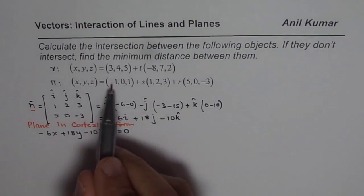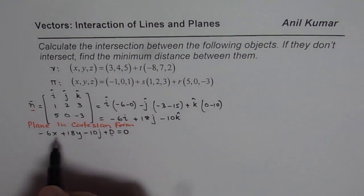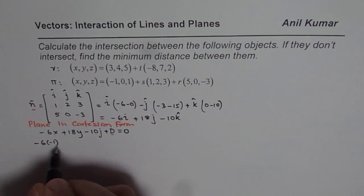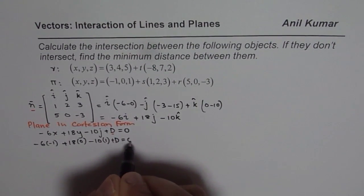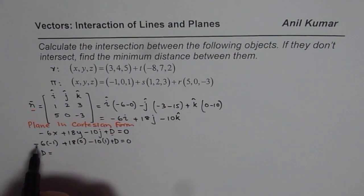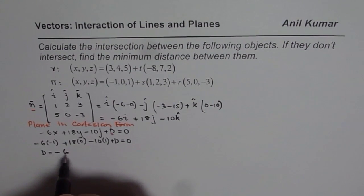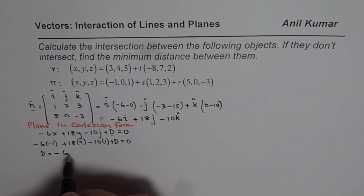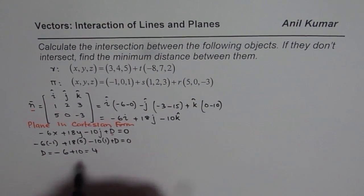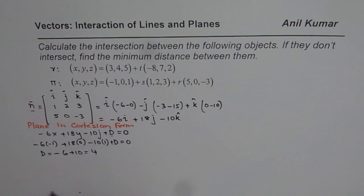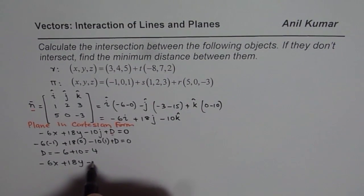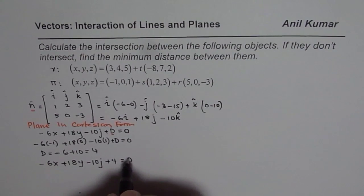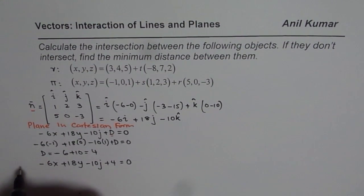We need to find d. Substituting the point (-1, 0, 1): -6(-1) + 18(0) - 10(1) + d = 0, giving 6 + 0 - 10 + d = 0, so d = 4. The Cartesian equation of the plane is: -6x + 18y - 10z + 4 = 0.